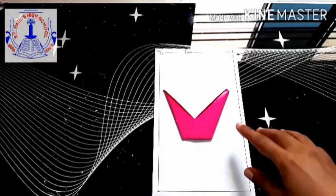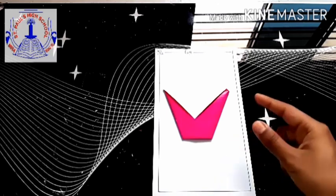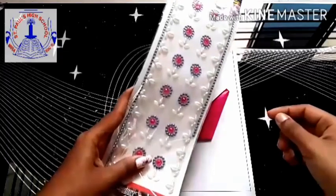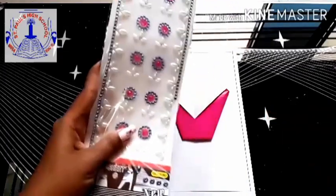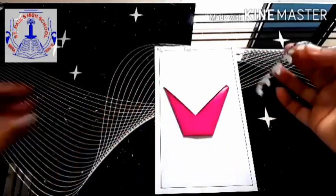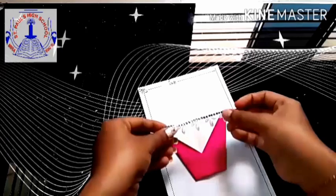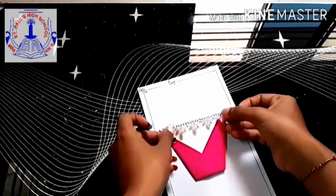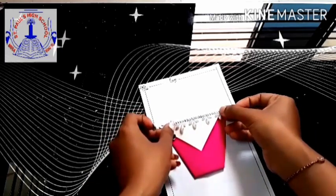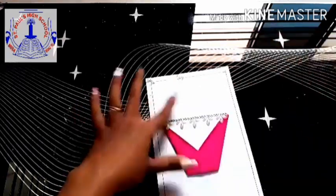Now you all can decorate the cup. I am going to use decorative materials. See I have some diamonds. If you all have it at home, you all can use it. I will put it for the border. It's not compulsory to use diamonds. If you all have, then only use them.